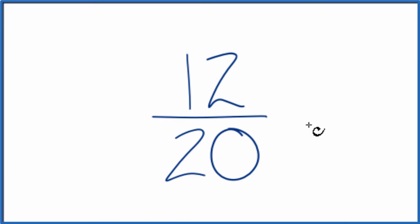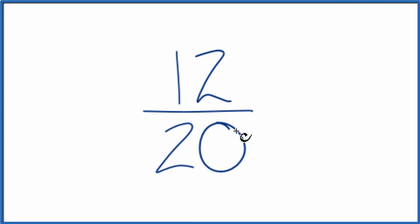To do that, we need to find a common multiple of 12 and 20. So let's write the multiples for 12 and for 20.